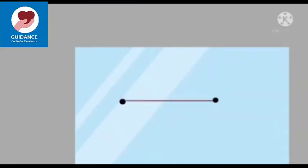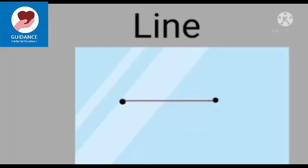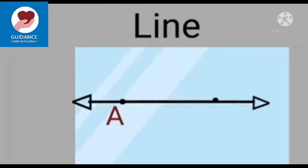If two different points are marked on a flat surface and are joined, then a part of a line is formed. This is called a line. If we join any two points with a ruler and extend it on both sides, a line is formed. For example, line AB.